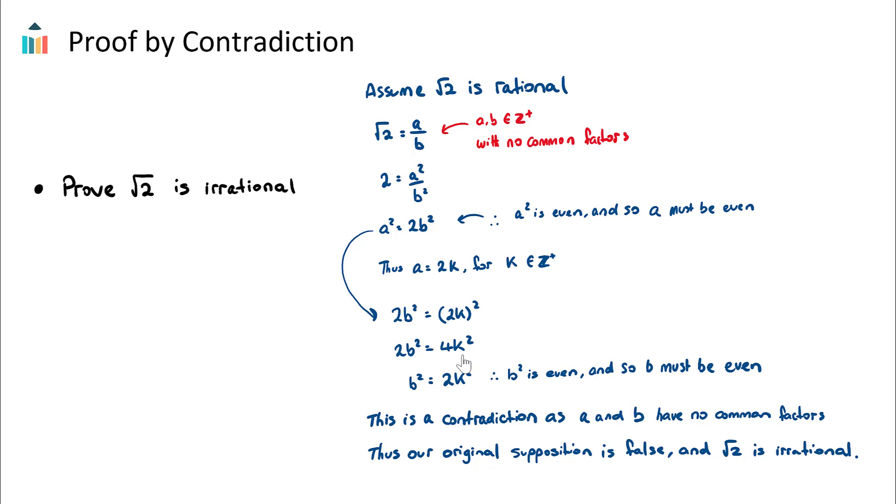So 2b² = 4k², and if we divide both sides by 2 I'll get b² = 2k². And likewise we had up here, if b² = 2 times something we know that b² is therefore even.